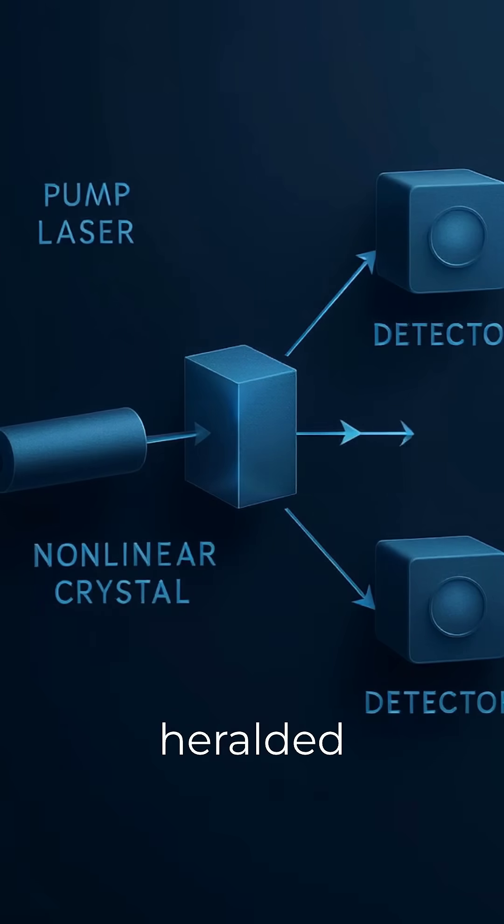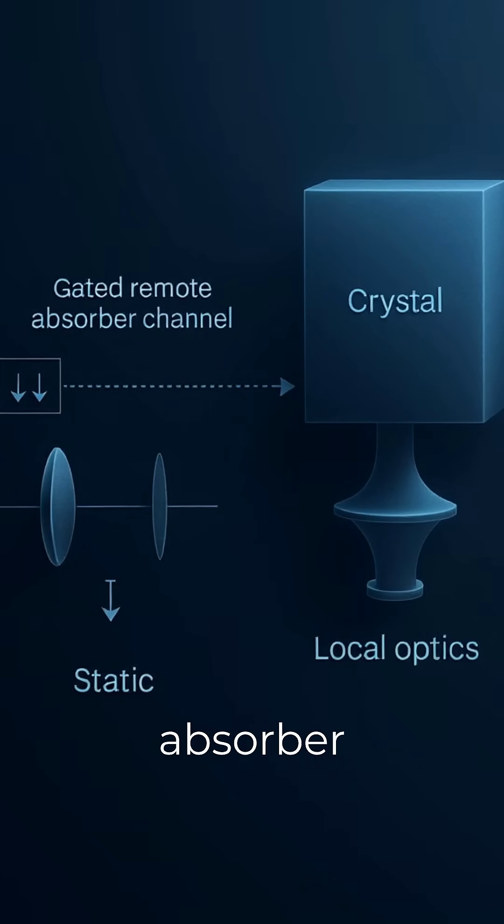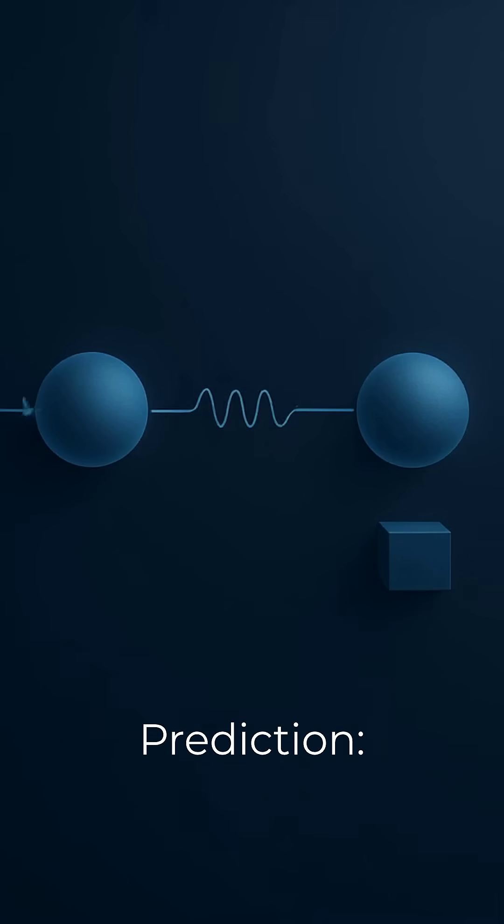Test it with heralded photons. Gate a remote absorber without touching the crystal's local optics. Prediction: without an absorber, the pair isn't realized.